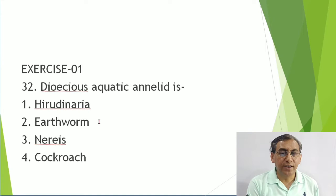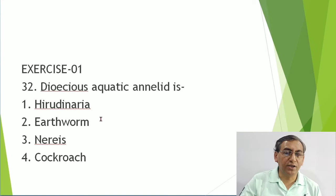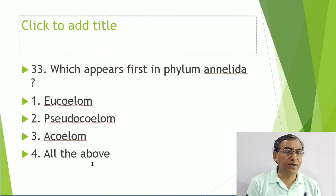Questions on Annelida: Dioecious aquatic Annelida - as given in NCERT - is Nereis (rag worm, sand worm, clam worm). Hirudinaria is monoecious, and earthworm (Pheretima) is monoecious. Cockroach is dioecious but belongs to Arthropoda. The question is asking about Annelida specifically.